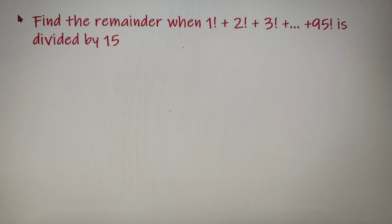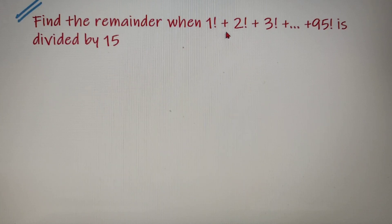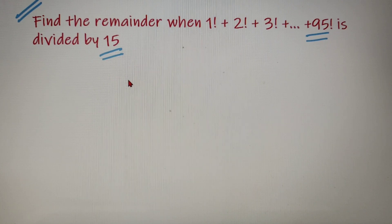Now question for this video is that find the remainder when 1 factorial plus 2 factorial plus 3 factorial all the way up to 95 factorial is divided by the number 15. So try to solve this question by yourself and then come back to this video for the solution.